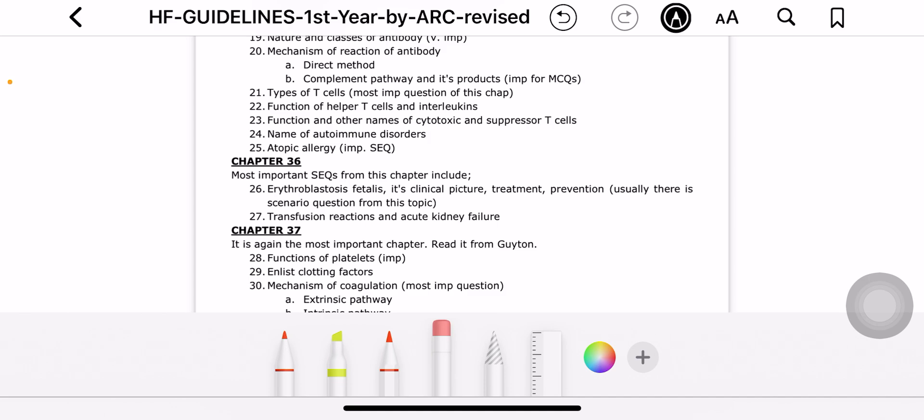These are three very importantly asked questions in vivas as well, scenario-based. You should know these things. Know how to differentiate them. Then what is calcium's role in intrinsic and extrinsic pathways? Which intravascular anticoagulants are important? What is heparin's role? What is antithrombin 3's role? Then what is fibrinolysis?